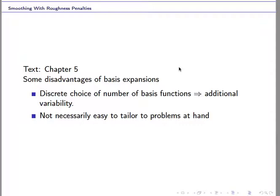One problem when we do the basic expansion is that we have to choose the number of basic functions carefully. If we choose too many basic functions, we will have overfitting problems. If we have too few basic functions, the basic function will not be flexible enough. So it is very important to choose the right number, and we use the cross-validation criterion to choose the optimal number of basic functions.